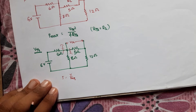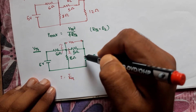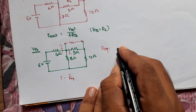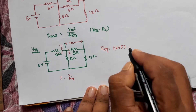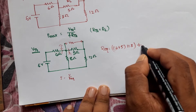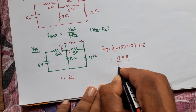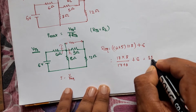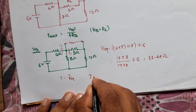To find R-equivalent: since the load is open, the 12Ω and 5Ω are in series, and that combination is in parallel with 8Ω, then series with 6Ω. So R-equivalent = (12 + 5) parallel with 8, plus 6 = (17×8)/(17+8) + 6 = 11.44Ω.